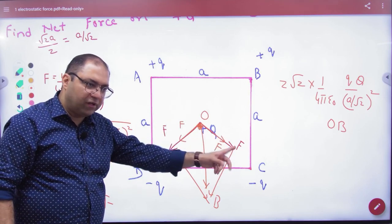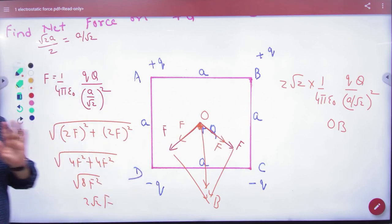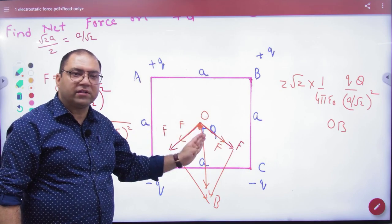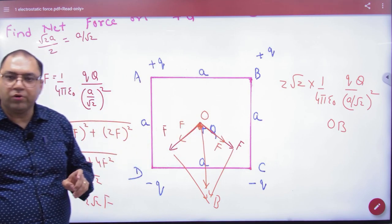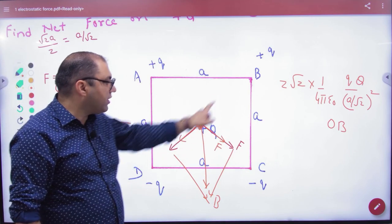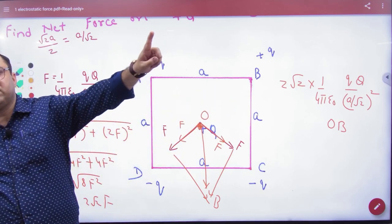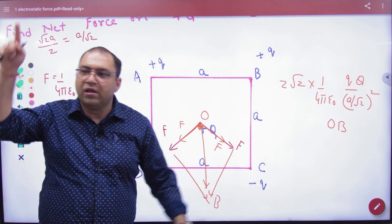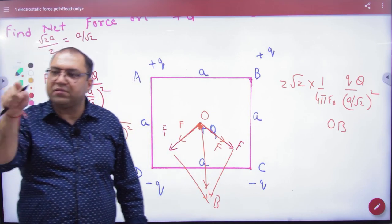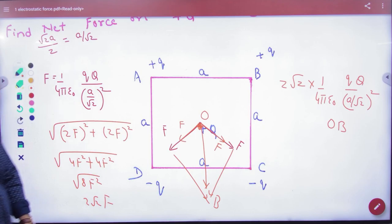2f, 2f, 90 degree vector sum. Now tell me, if these four charges are positive, what would the net answer be? Zero. Why? Because this positive repels and this also repels - they cancel. Like this also, they cancel. So if all charges are positive, then the net answer is zero in the center. Clear?